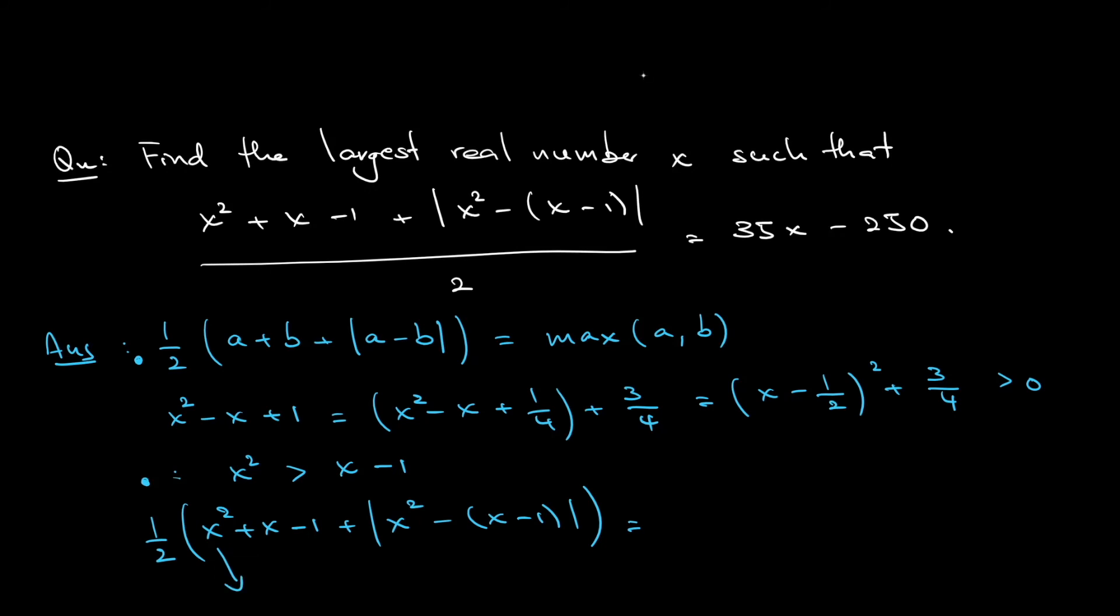Let's say I can say that this is my a and this is my b. So this is equal to the maximum of either a, which is my x squared, or b, which is x minus 1. Using my second observation, I have already proved that x squared is always greater than x minus 1.